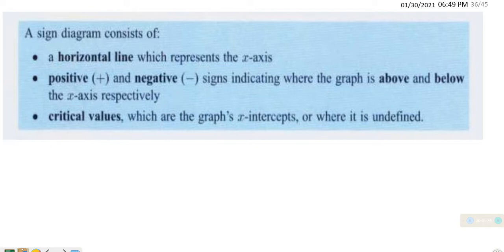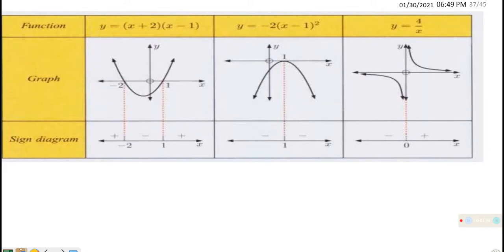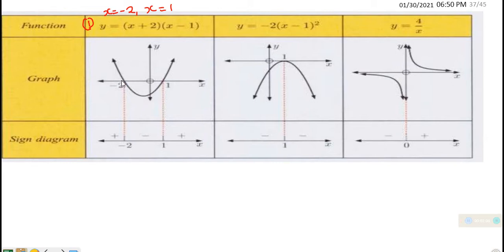We are going to look at examples — these are true examples of sign diagrams. For number one, the function is y equals (x + 2)(x − 1), a factorised quadratic expression. Setting each factor to zero gives x = −2 or x = 1. The graph is going to be U-shaped because the coefficient of x² is positive, with x-intercepts at −2 and 1, and the y-intercept is −2.